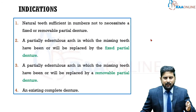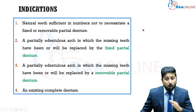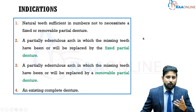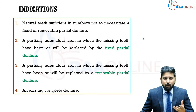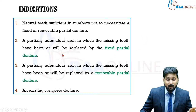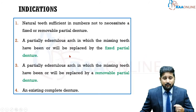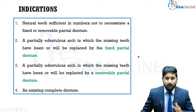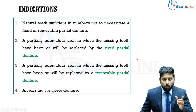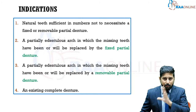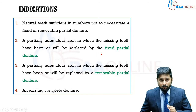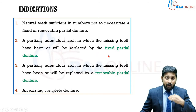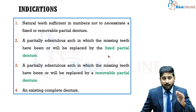Where is a single complete denture normally indicated? First, when natural teeth are sufficient in numbers and do not necessitate a fixed or removable partial denture — meaning you have a full complement of natural teeth in the opposing arch with no missing teeth requiring replacement. Second, when you have a partially edentulous arch in the opposing side where the remaining missing teeth are going to be replaced by a fixed partial denture — so you have a Kennedy's Class I, II, III, or IV situation in the opposite arch.